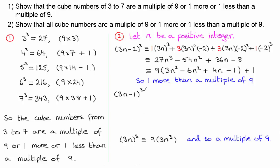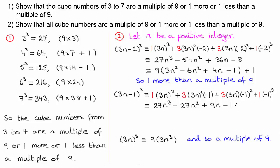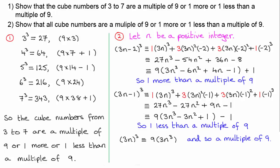For (3n − 1)³ I'll do it similarly using the binomial expansion. Expanding gives this expression, which simplifies to this. Nine is a common factor over the first three terms, so we draw that nine out, and then we have minus one on the end. This is an integer, so we've got a multiple of nine minus one — meaning it is one less than a multiple of nine. This holds when n equals one, giving 2³ = 8 = 9 × 1 − 1. When n is two this gives 5³ = 125 = 9 × 14 − 1. And so on.